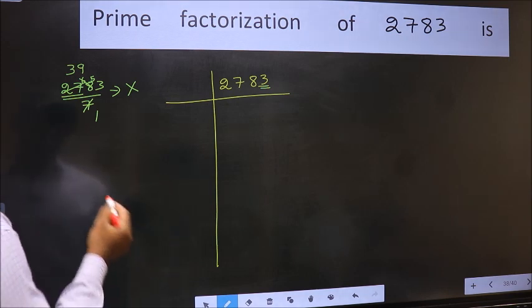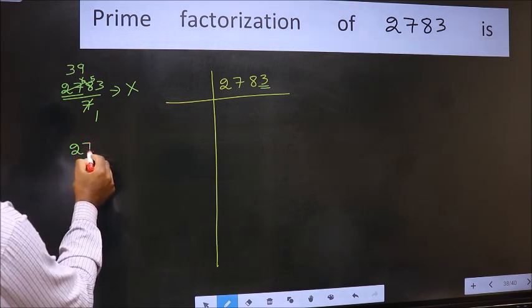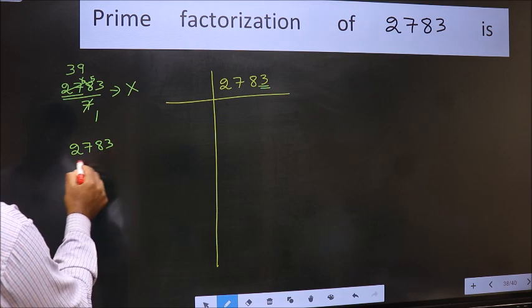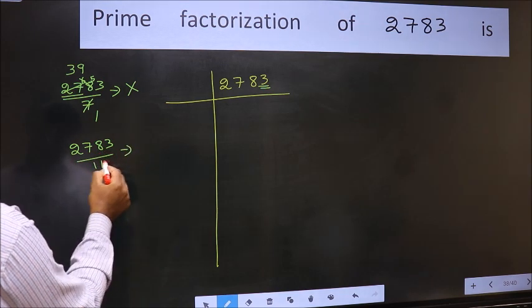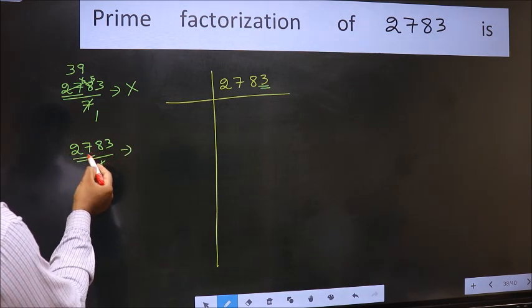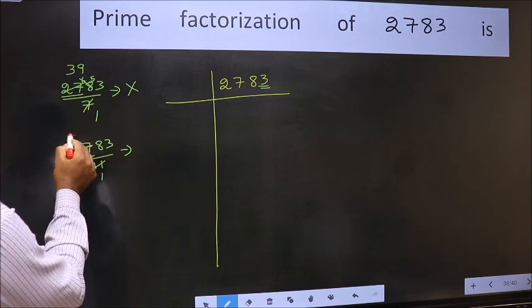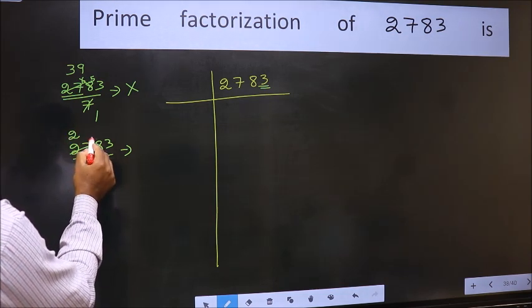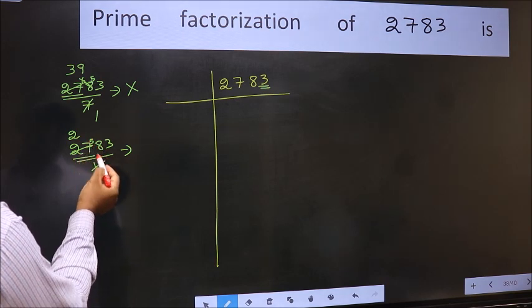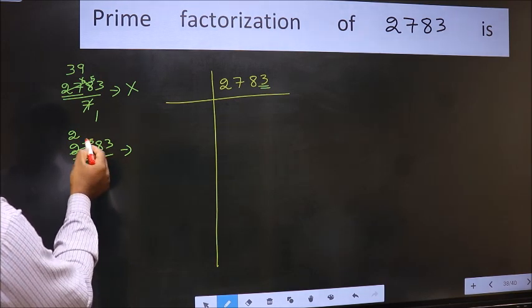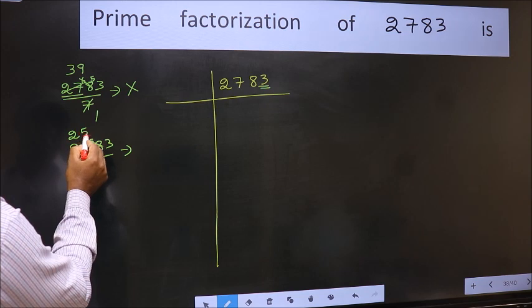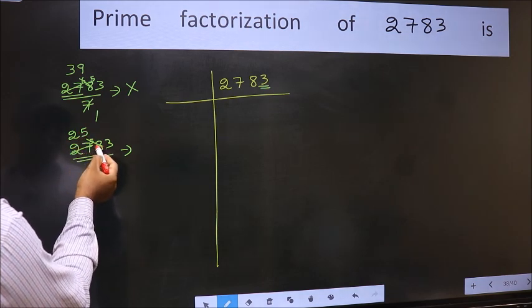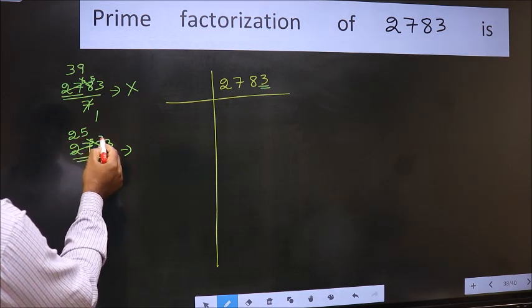Next prime number 11. A number close to 27 in 11 table is 11×2 is 22. 27 minus 22 is 5, 5 carried forward gives 58. A number close to 58 in 11 table is 11×5 is 55. 58 minus 55 is 3, 3 carried forward gives 33.